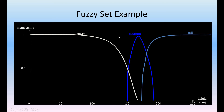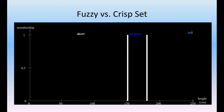Let us see a fuzzy set example with membership for tall, short, and medium. In the range of 150 to 200, we have medium and tall described together — tall starts within 150 to 200, and short also falls under 150 to 200. So the fuzzy set in between 150 to 200 represents the height, and like this we can represent the fuzzy set function.